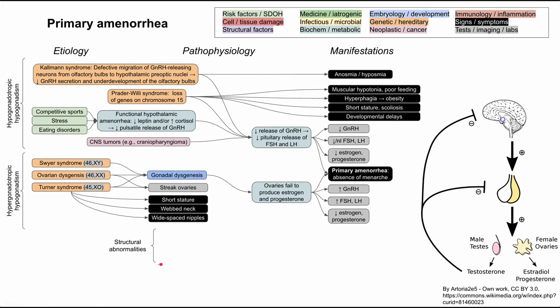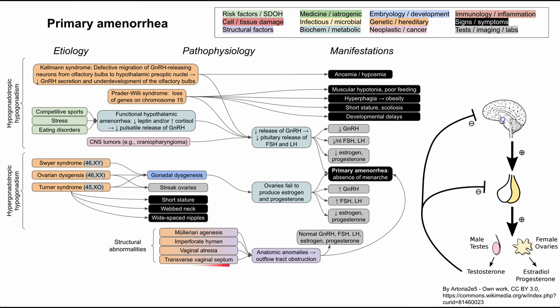There are also structural abnormalities that can lead to primary amenorrhea. These patients have essentially normal hormones — normal GnRH, FSH, LH, estrogen, and progesterone — but there's a problem with the genital outflow tract due to anatomic abnormalities that prevent uterine lining from shedding out of the vagina. Subtypes include Müllerian agenesis, imperforate hymen, vaginal atresia, and transverse vaginal septum.